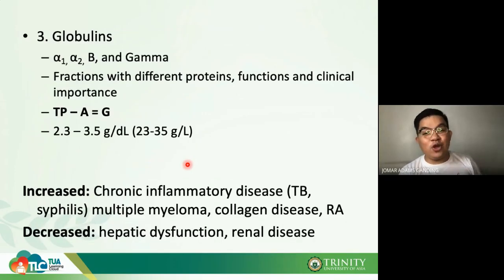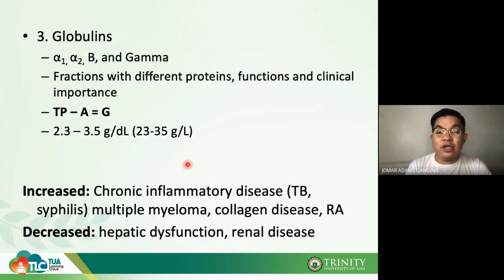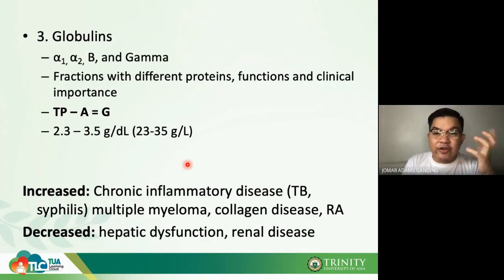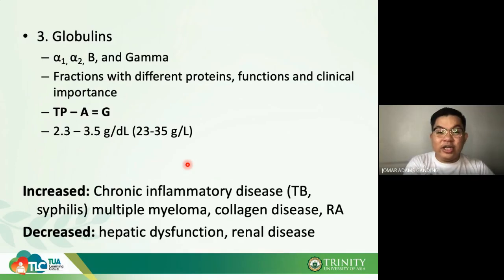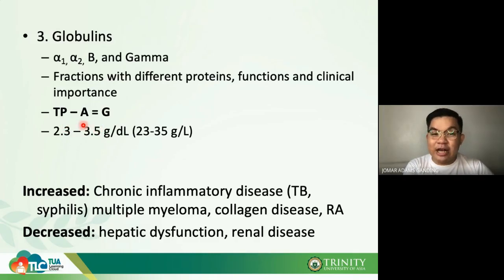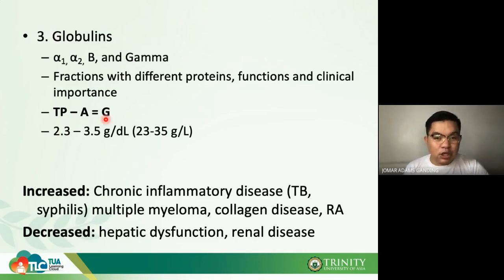Moving forward to globulins: we will be talking about 17 types of globulins. Globulins are actually not directly measured in the laboratory. Only total protein and albumin are directly measured. Globulin is derived by calculation: total protein minus albumin equals globulin — similar to how LDL is derived.